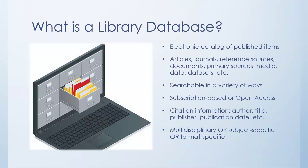What is a library database? A library database is an electronic catalog of published items. These items can be articles, journals, reference sources, data sets, pieces of data — anything that is a piece of information can be in a database. It's also searchable in a variety of ways. It may be subscription-based where you have to pay to access content, or it could be open access, and we are starting to see more open access scholarly databases out there.